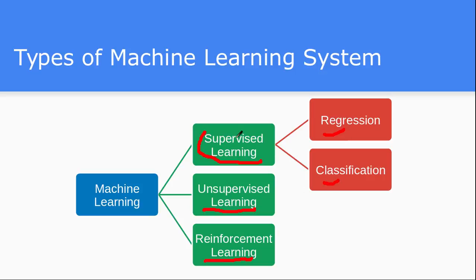We will see one by one what are the characteristics of each individual category — what is supervised learning, what is unsupervised learning, what are the different parameters associated with that, and what kind of problem each individual category is trying to solve in the machine learning system. Reinforcement learning we will cover in a subsequent lecture. So let us begin with supervised learning.